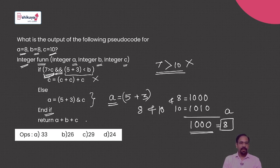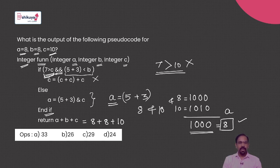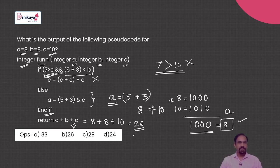Then return A plus B plus C. The value of A is 8, B is 8, and C is 10. So 8 plus 8 is 16, plus 10 gives 26. This is option B. So the correct option for this pseudocode is option B, 26.